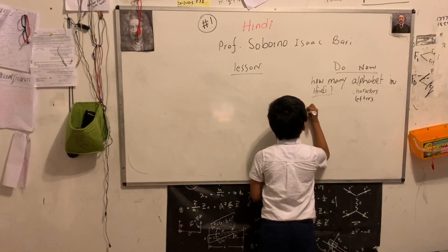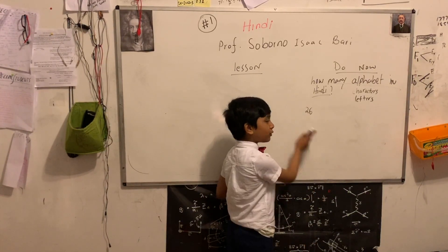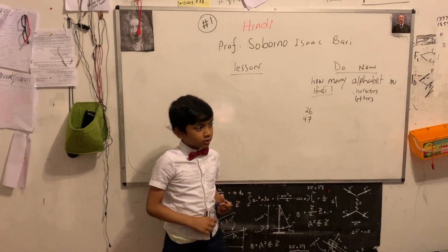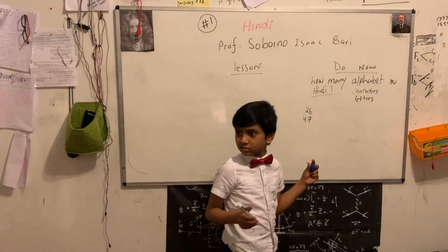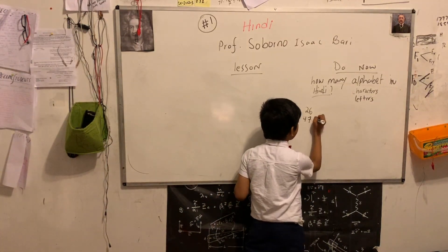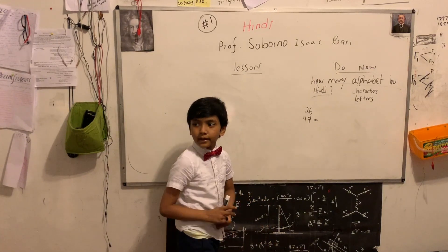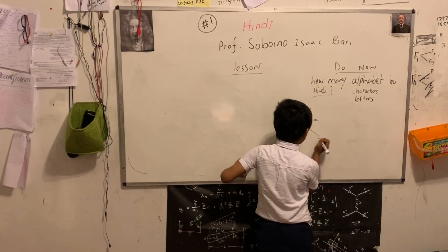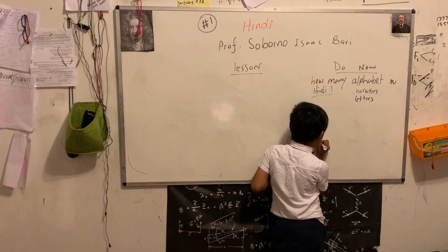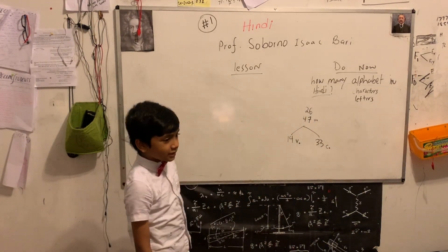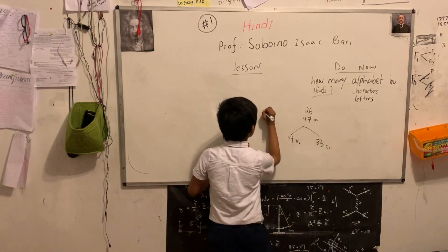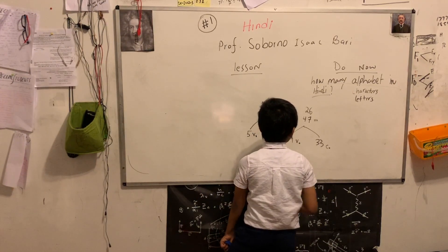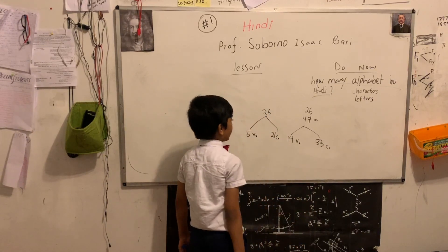There are a lot more characters in Hindi than in English. There are 47 characters. There are also two side characters, so technically almost 49. This consists of 14 vowels and 33 consonants. That's a lot of vowels. In English, the 26 consists of 5 vowels and 21 consonants, which is notably less than the Hindi alphabet.